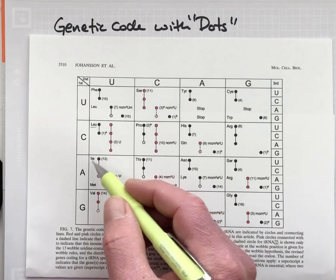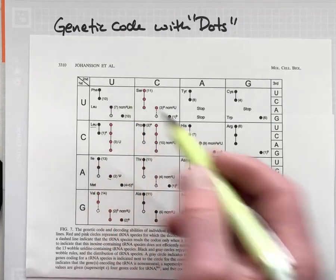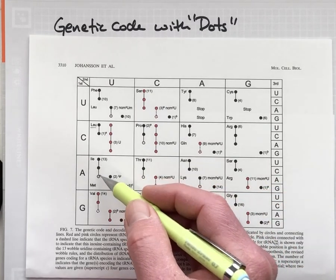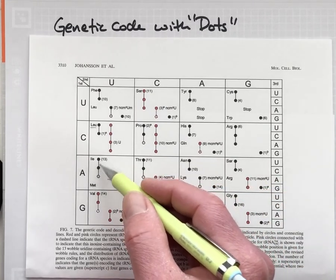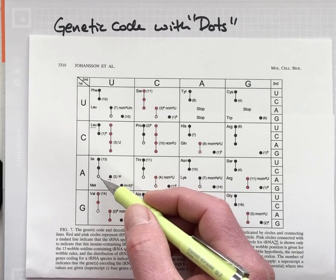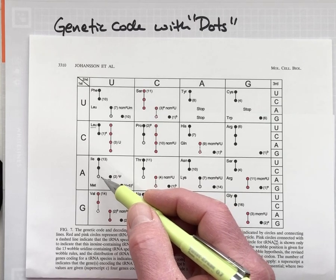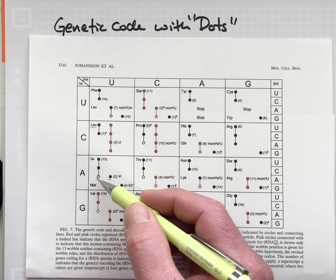There's another isoleucine-carrying tRNA that's able to decode AU and then U and C. The U and C are decoded, indicated by these filled circles.